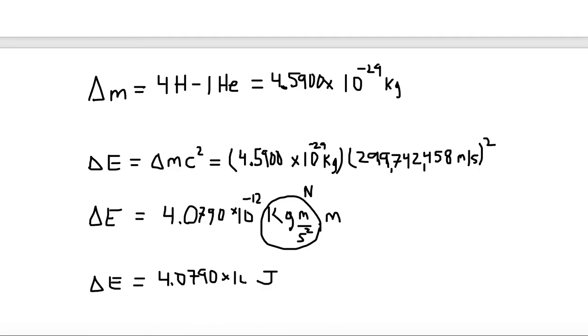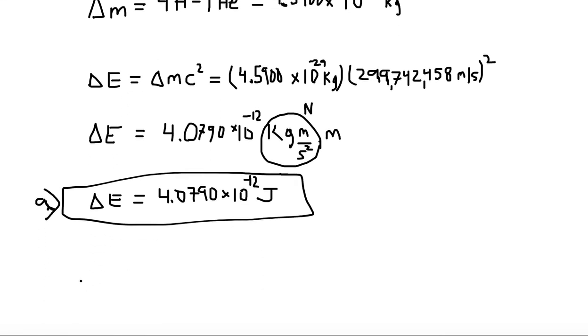Now that's a very small amount of joules per one single reaction. But inside the core of the sun, there are many, many reactions going on at the same time. So this is the answer to part A.